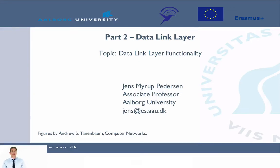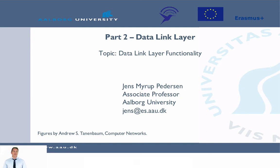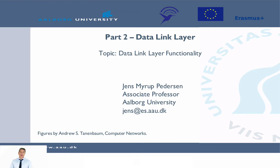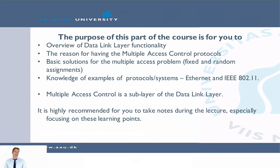Welcome to part 2, which is about the data link layer. The first topic we will look at is data link layer functionality. The purpose of this part of the course is to get an overview of data link layer functionality, to understand the reason for having multiple access protocols, to understand basic solutions for the multiple access problem with fixed and random assignments, and to have some knowledge of examples of protocols and systems. The examples I will be using are Ethernet and IEEE 802.11, so wireless LAN.